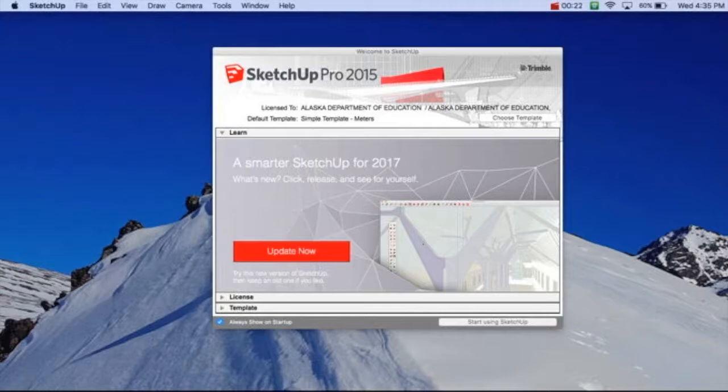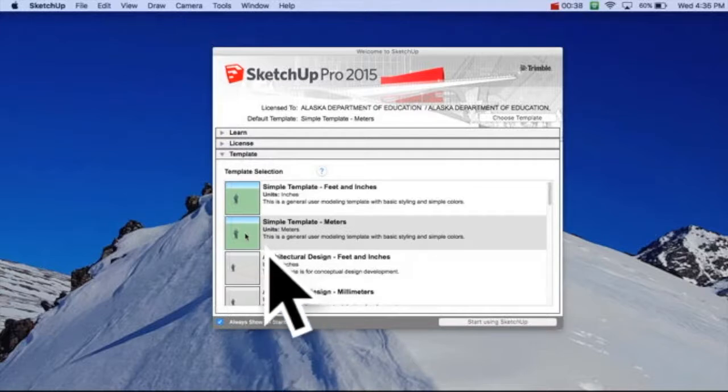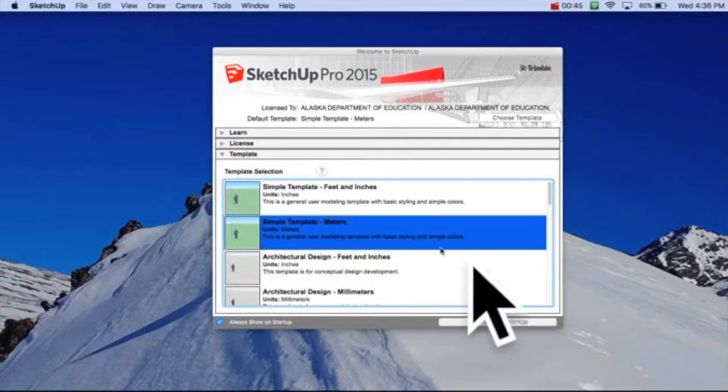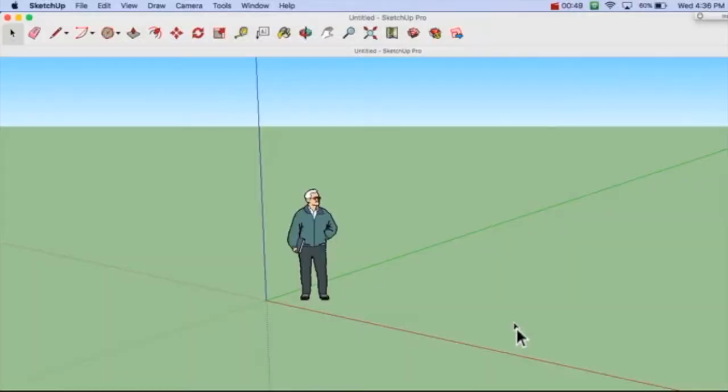Now remember, this is a math assignment. I know you guys out there in SketchUp land will tell me there's easier ways, but we're doing this for a math assignment. So we open up SketchUp Pro 2015. This is what we have in the Anchorage School District. We're going to go to template and to make things easier, we're going to go to meters, simple meters.